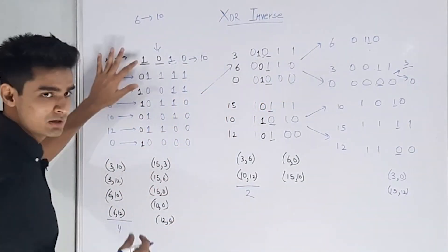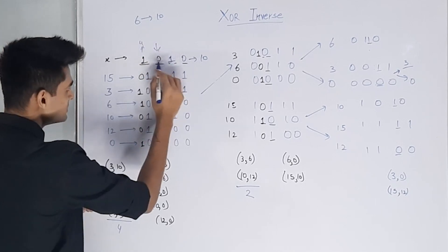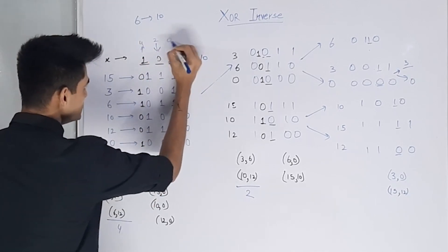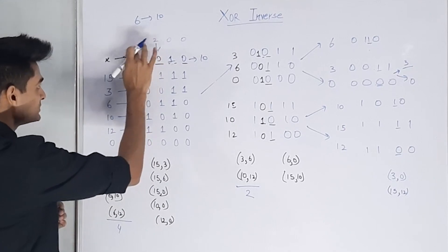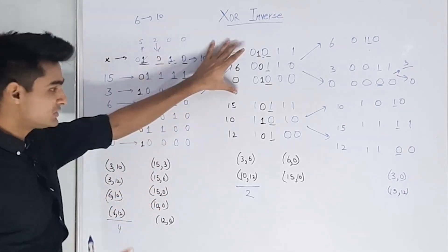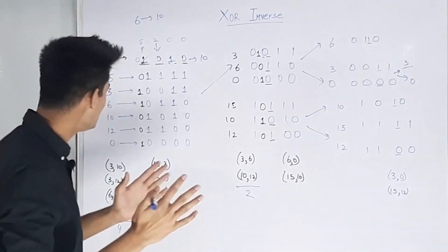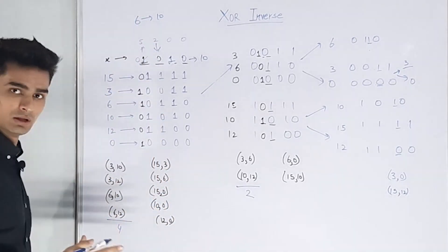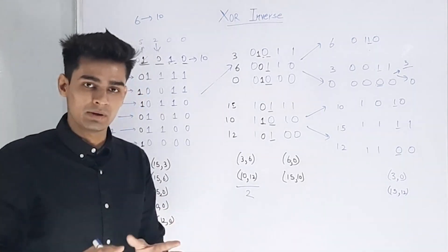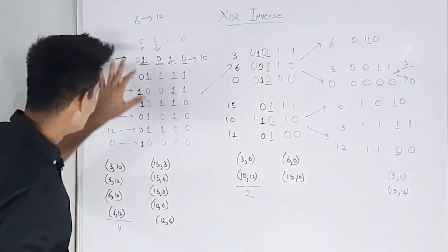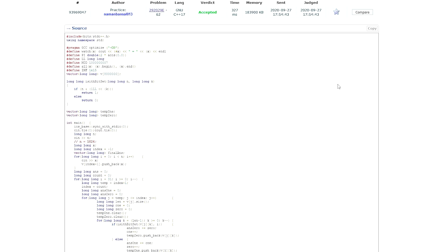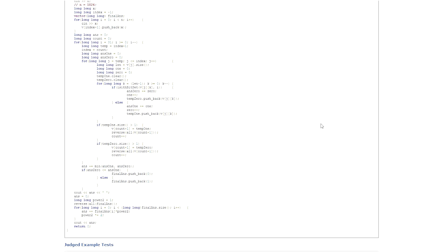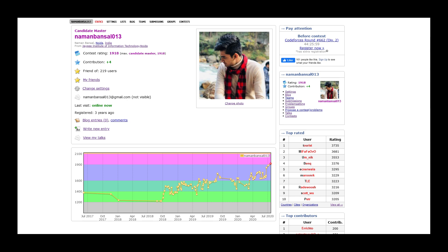Let's understand why this greedy works. The first bit contributed 4 inversions with bit=1 versus 5 with bit=0. If we had taken 0 instead, the split between sets would remain the same and all subsequent inversions would be identical — only the current step's count changes. Therefore we must always minimize inversions at the current bit position, and this greedy is always optimal. The answer is X=10 with 6 inversions. Link to the submission is in the description below.